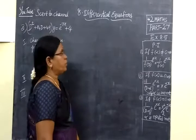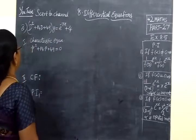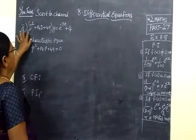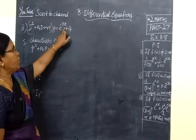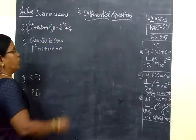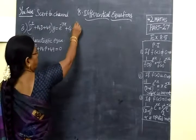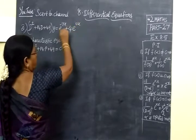Welcome to Part 27, Exercise 8.5. The problem is D² + 14D + 49 of Y = e^(-7x) + 4e^(0x). Because we have e power, the particular integral method is applied, which makes it a little bit easier.